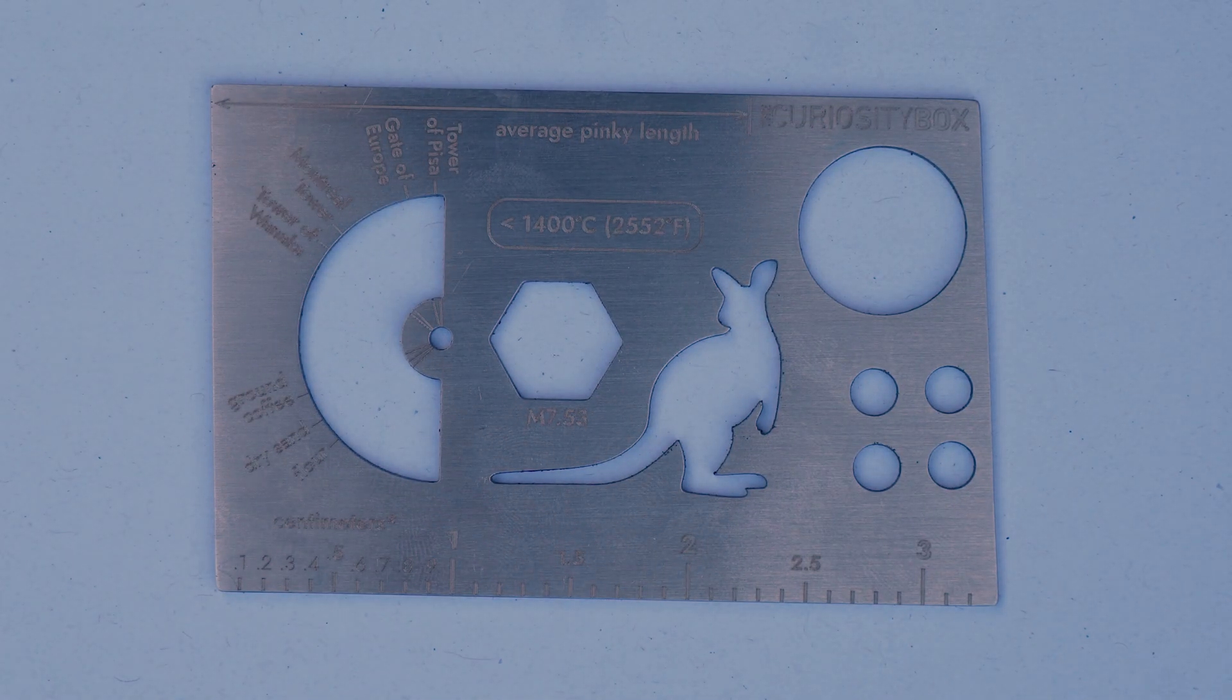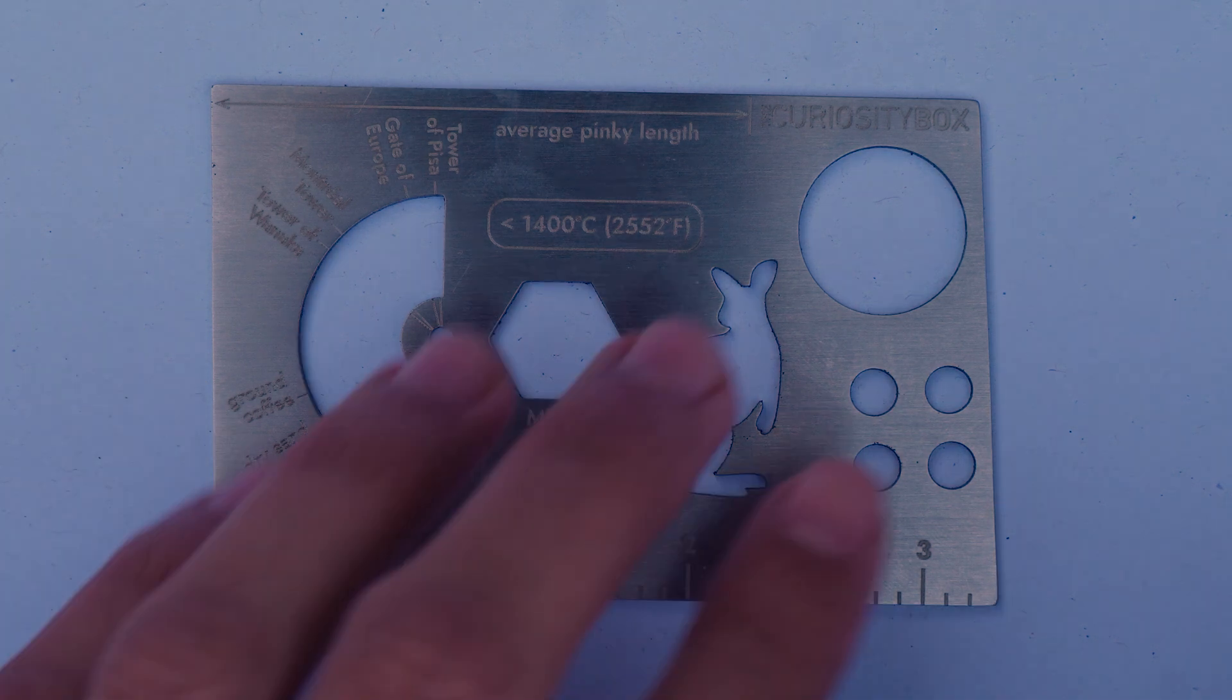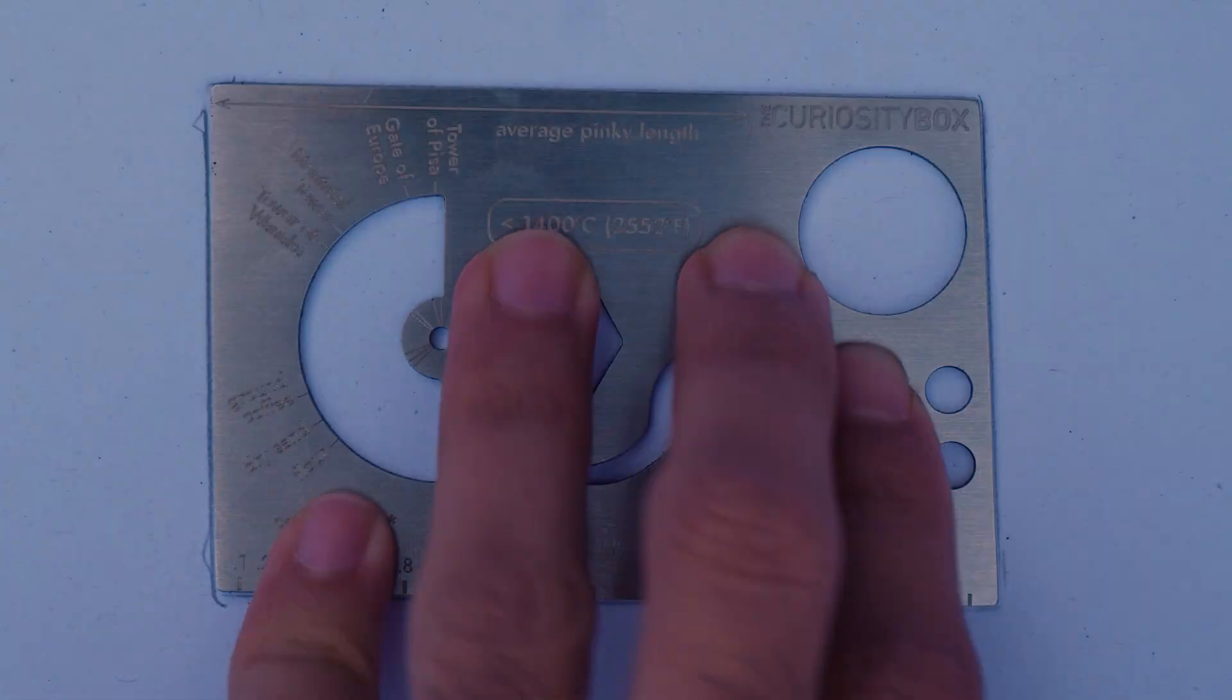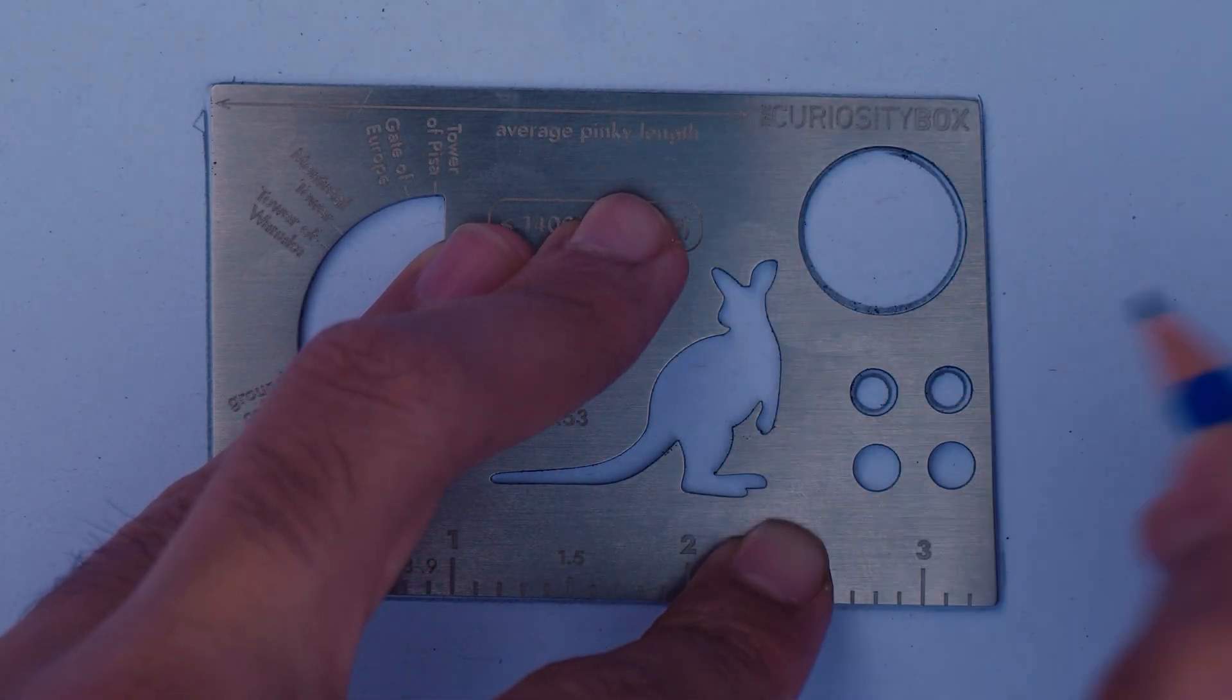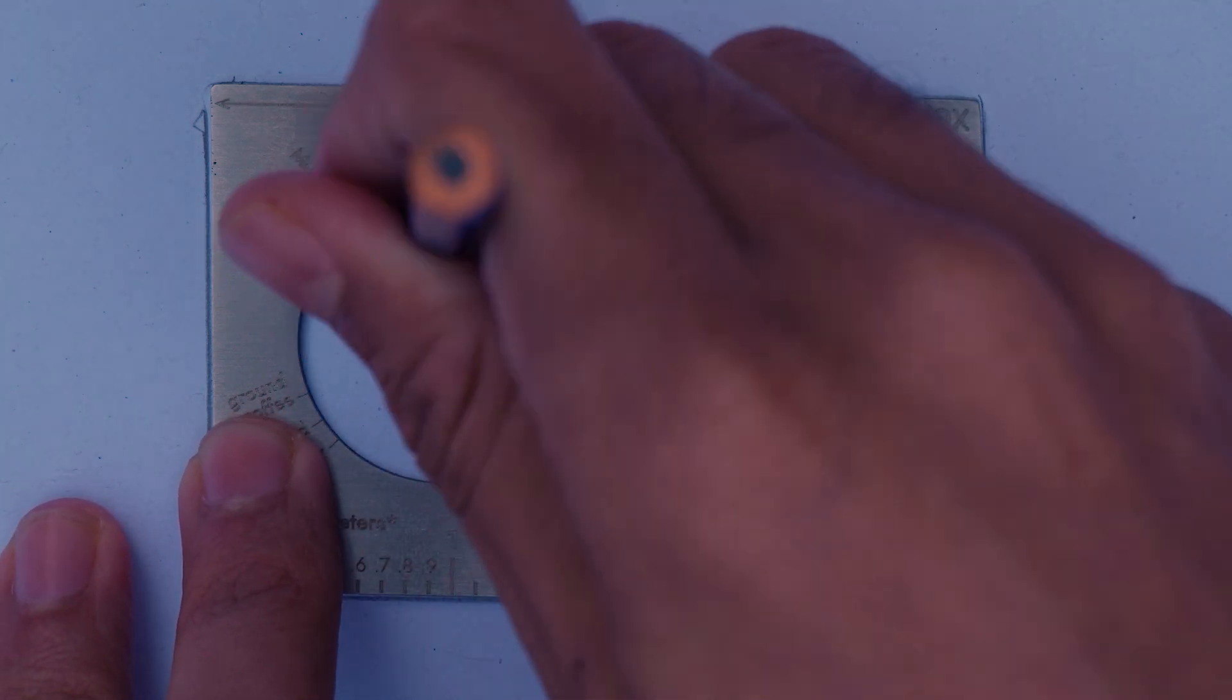This is the EDC Multi-Fool that you get in the curiosity box, which unlike other tools have multiple uses for very specific circumstances. Forget about measuring lengths in meters and centimeters. Let's use the average size of human pinky.